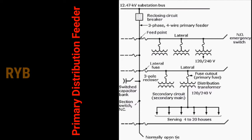The primary distribution feeder consists of a main feeder, which is usually a three-phase four-wire circuit, and branches and laterals. These are the three parts of the primary distribution feeder: the main feeder, branches, and laterals.